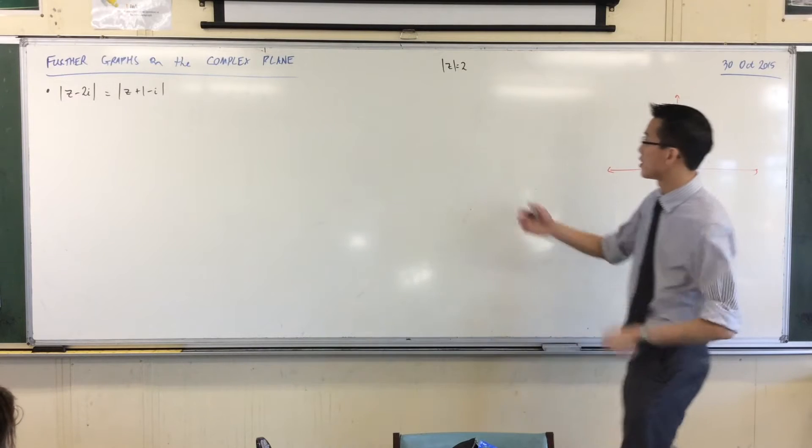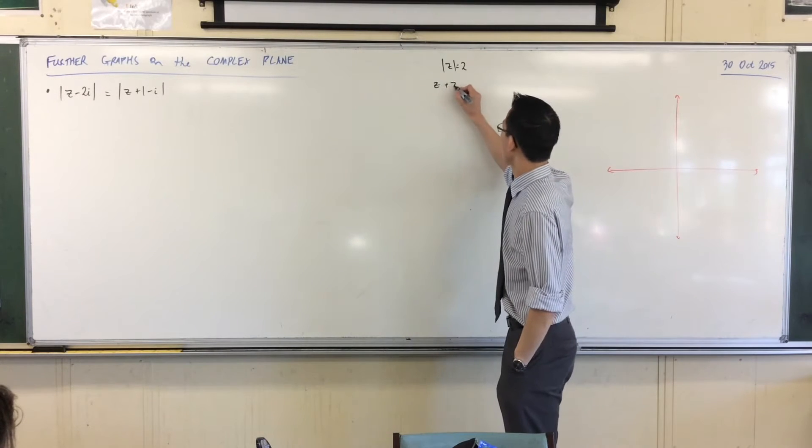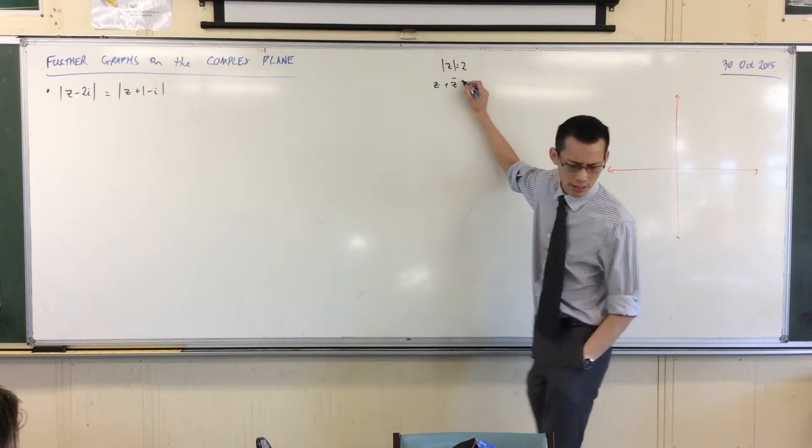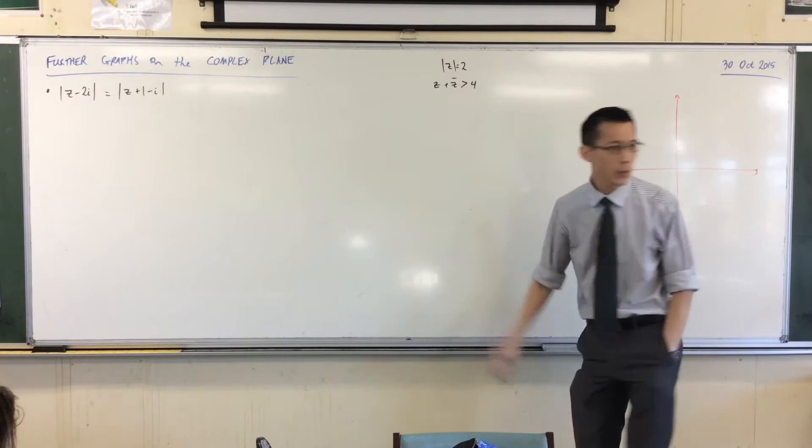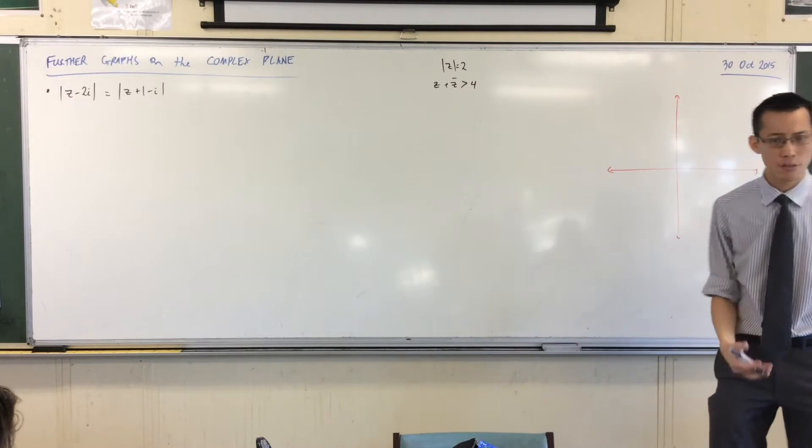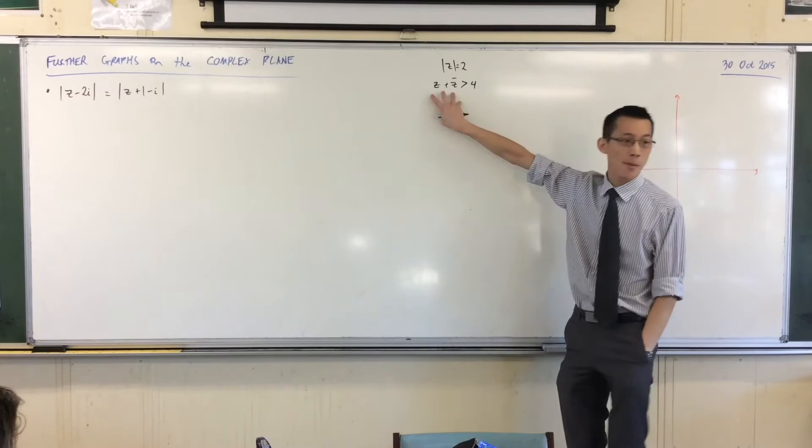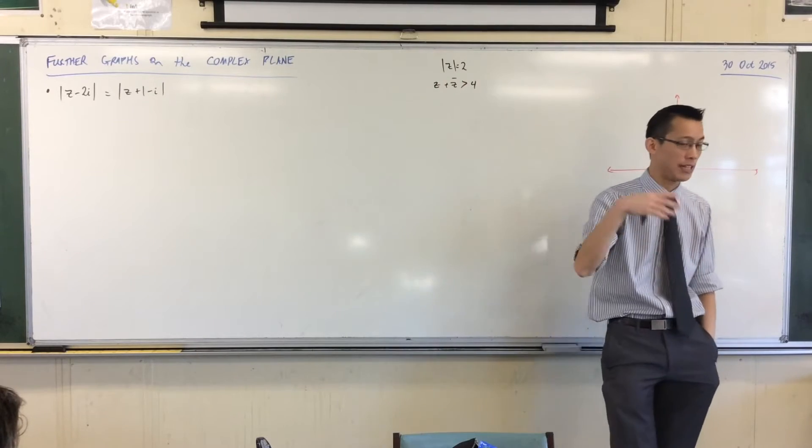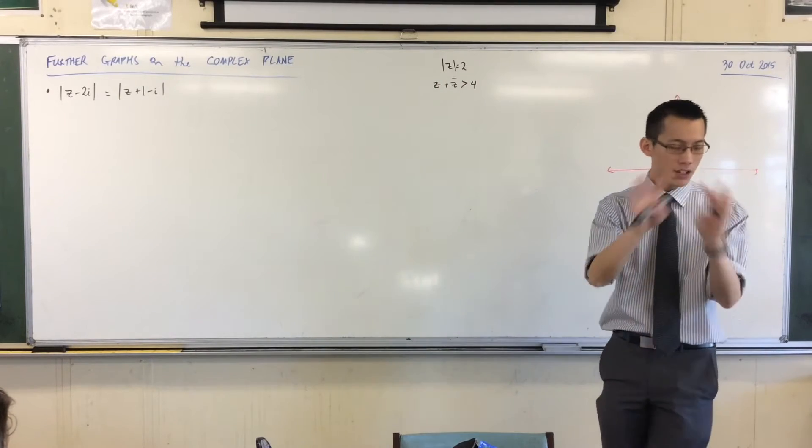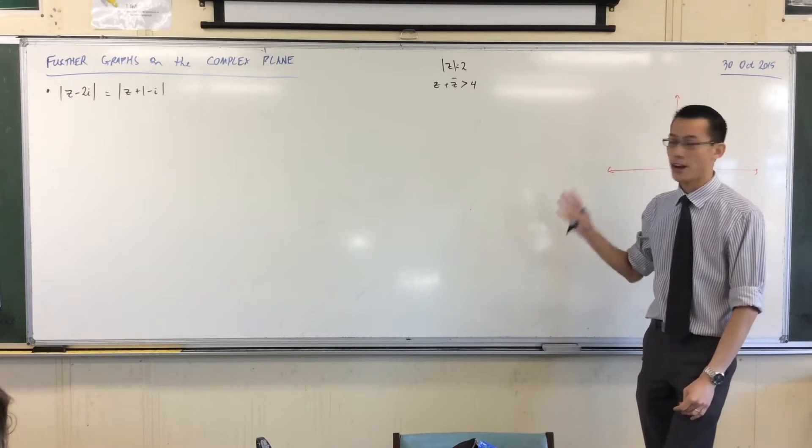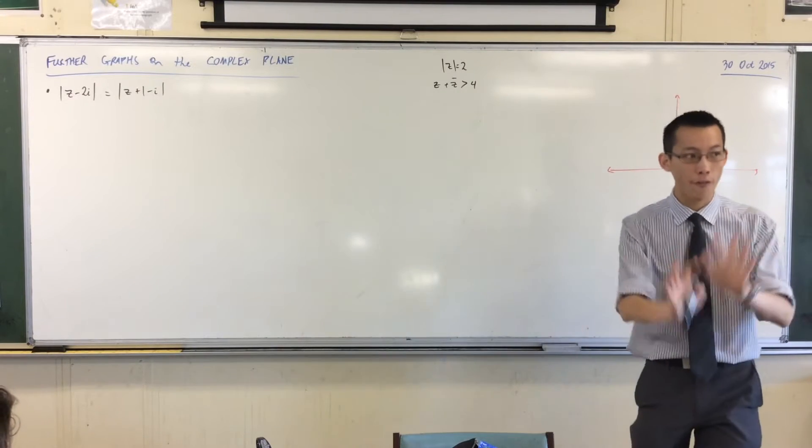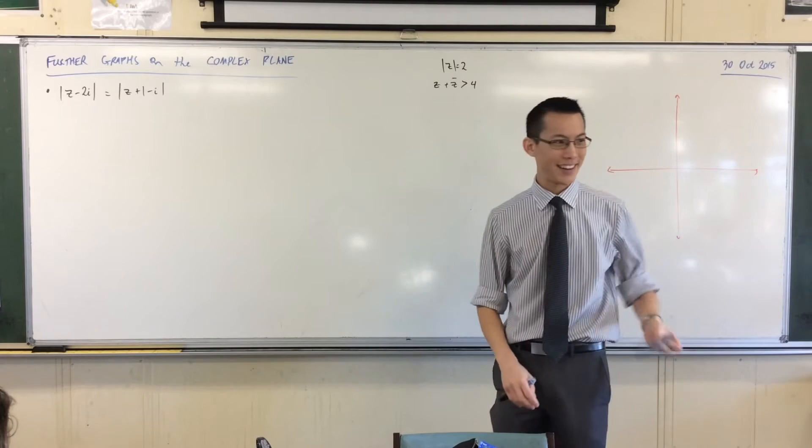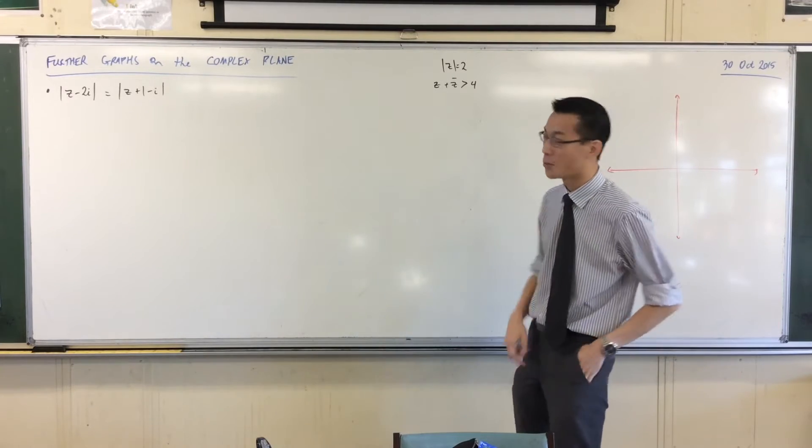We looked at some inequalities, we looked at stuff like this. You have to just tackle them algebraically, so here you can see your imaginary components are going to cancel out, which leaves you with just double the real component, you do your algebra, you get a region that accords with that. And on and on we do it. Now we're going to push a little further on this, and we're going to need our compasses to help us, so we'll get there.